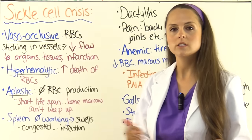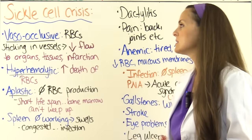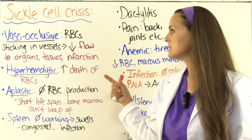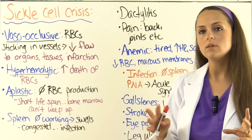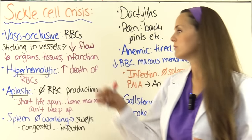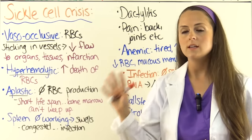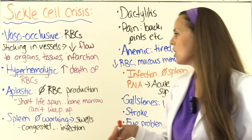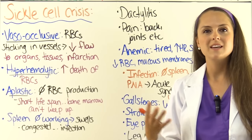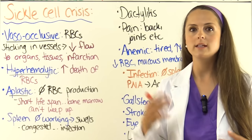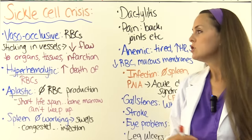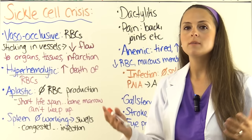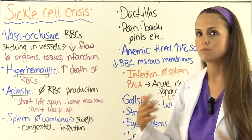During a sickle cell crisis, vaso-occlusive crisis occurs when sickled red blood cells stick together in the vessels, dropping blood flow to organs and tissues, leading to infarctions — strokes, renal failure, and more. Hemolytic crisis involves the rapid death of fragile red blood cells — they only live about 20 days instead of 120 — and as they break down, they release bilirubin, causing jaundice in these patients.